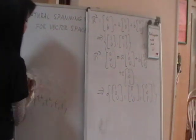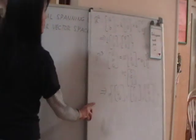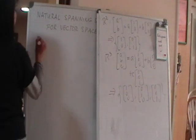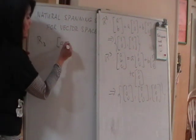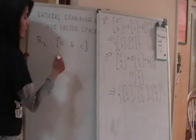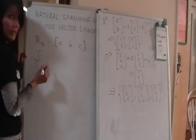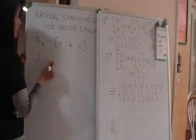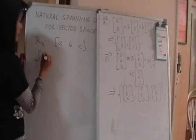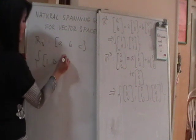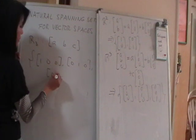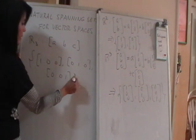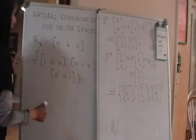The same idea applies to row vectors. Elements of R₃ as row vectors look like (a, b, c), and the natural spanning set is {(1,0,0), (0,1,0), (0,0,1)}.